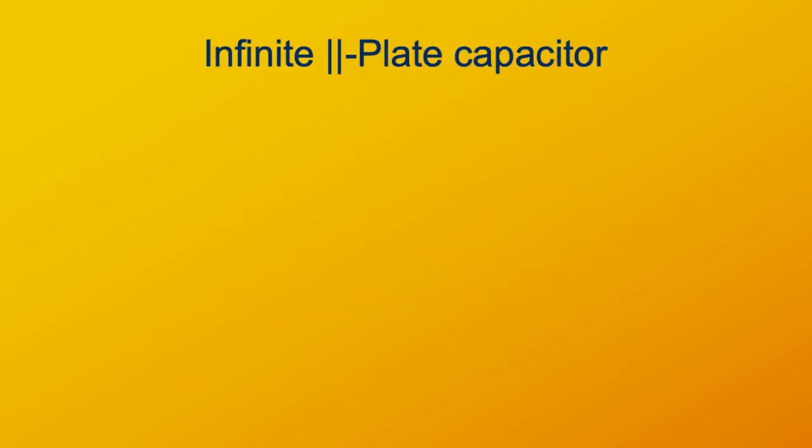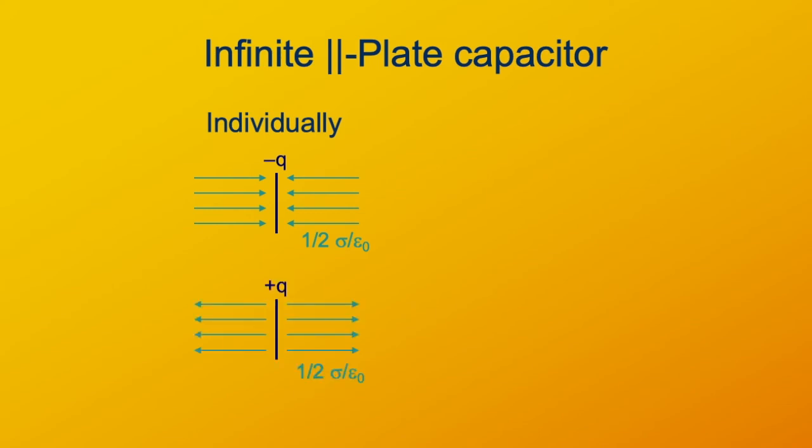So what about an actual capacitor? We looked at an infinite plane of charge, so now we'll look at an infinite parallel plate capacitor, which consists of two infinite planes which are parallel to each other, and each has an opposite electric charge which is uniformly distributed on each plate. So individually, the negative plate is going to have a uniform electric field pointing inward which has a magnitude of one-half sigma over epsilon-naught. The positive plate is going to have a uniform electric field directed outward with a magnitude of one-half sigma over epsilon-naught.